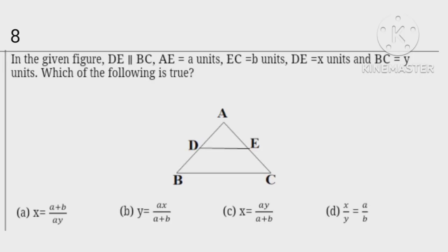Since DE is parallel to BC, therefore A upon A plus B equals X upon Y. Hence X equals AY upon A plus B.